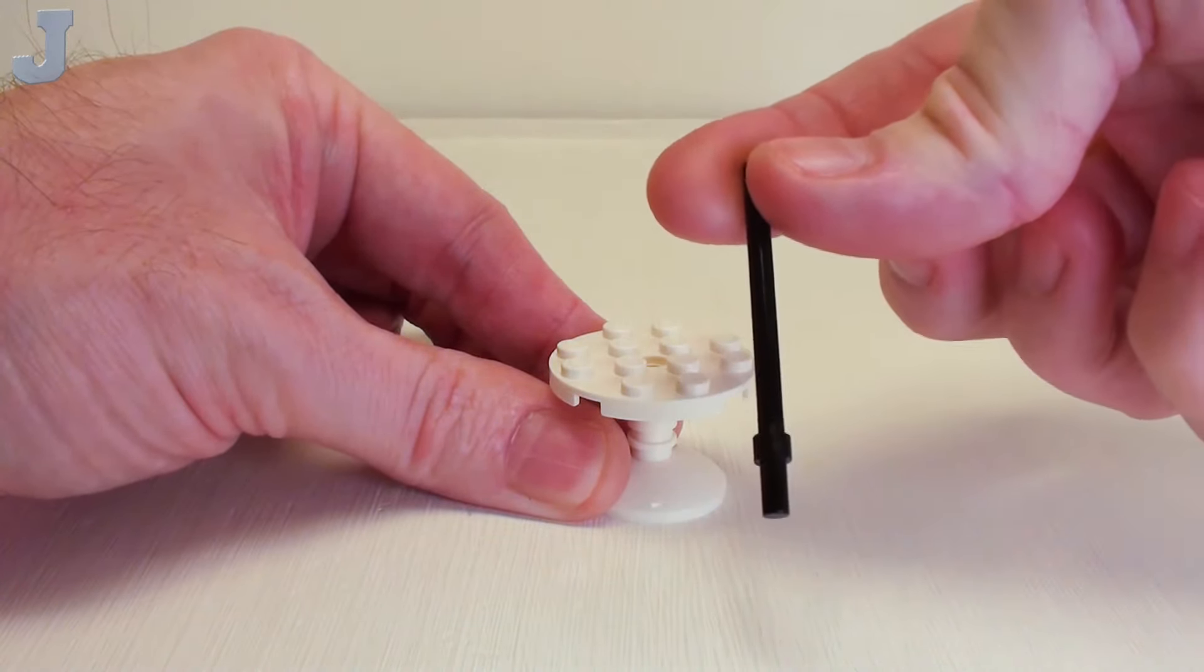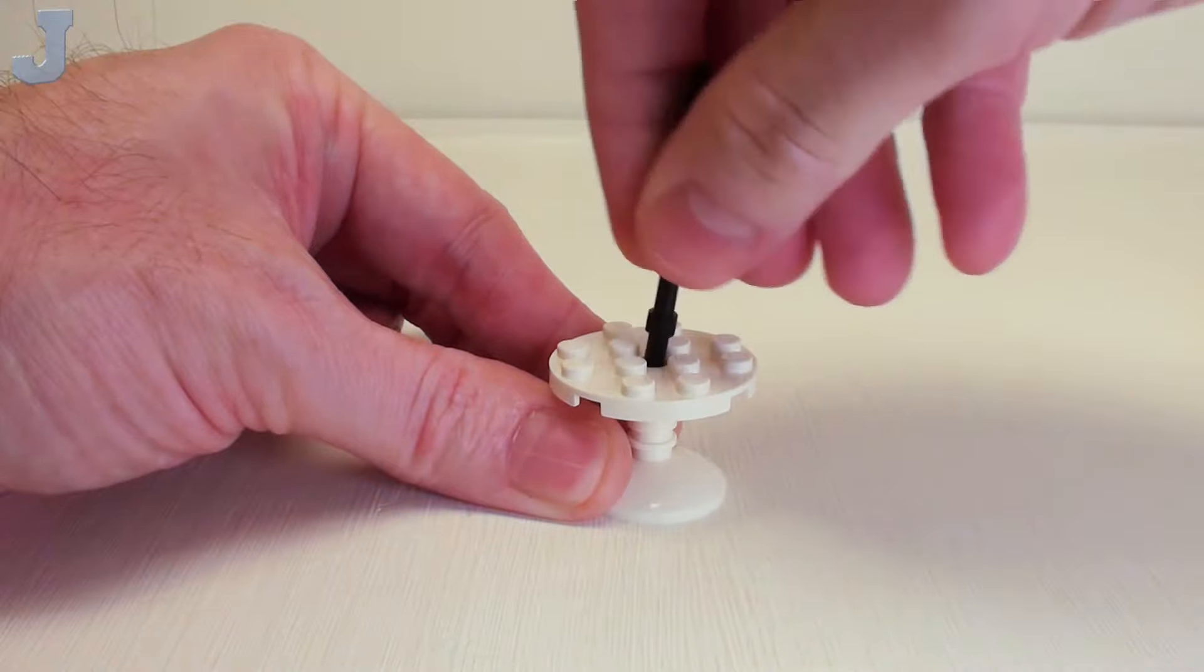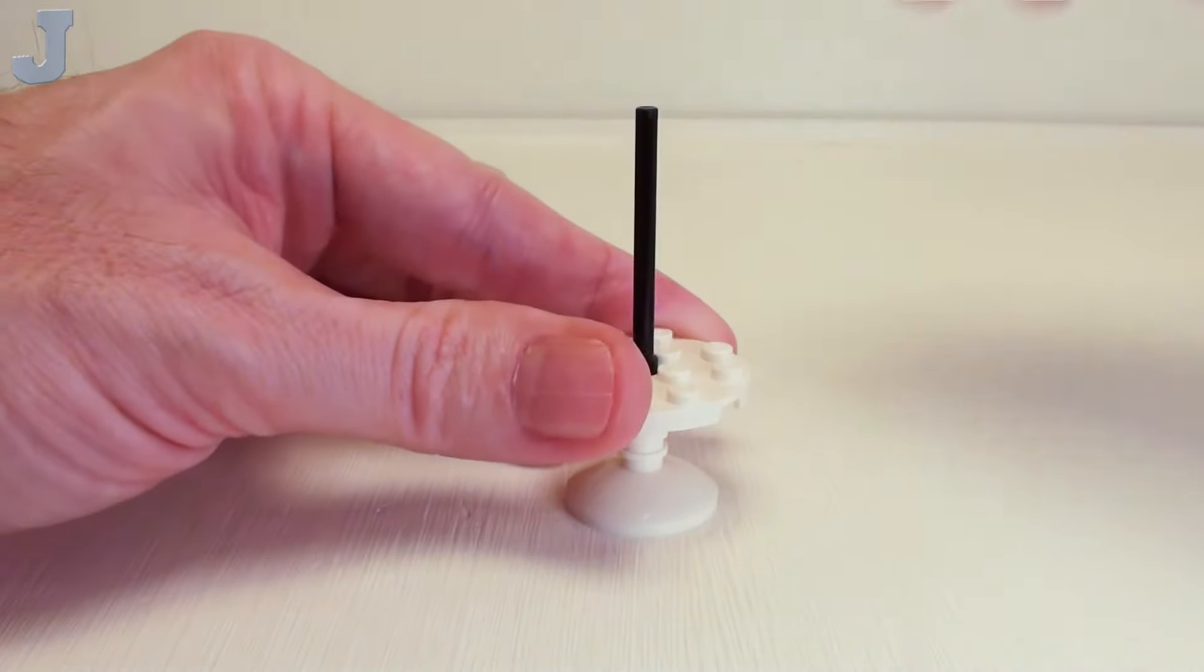Then we're going to take a 6 stud long stick with flange. Place the flange portion right in the hole.